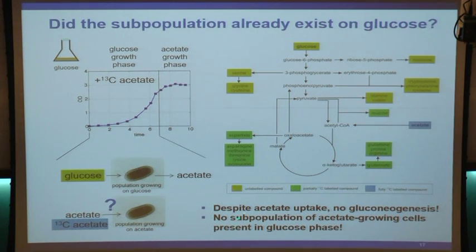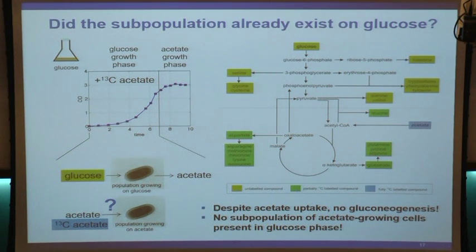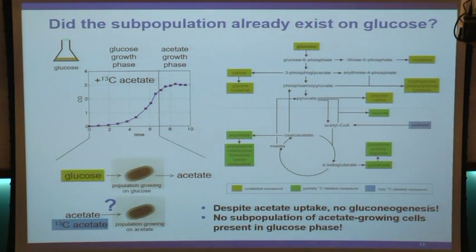This finding - that acetate is being taken up even during glucose growth - goes against the textbook concept of glucose repression, which says cells should shut down everything else when glucose is present. But apparently, even on glucose, cells take up acetate. This is actually very important for the flux sensing idea to work: the flux sensing rests on the assumption that all doors are always at least slightly open so that the cell can sense inside.